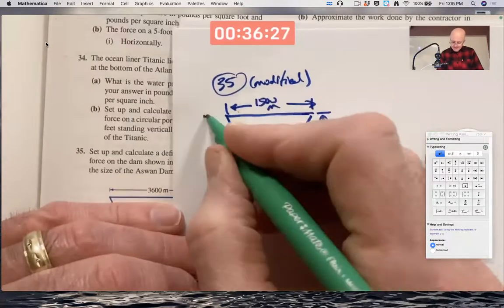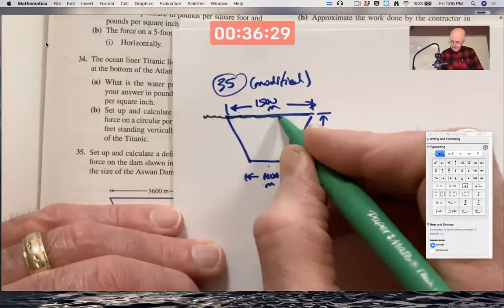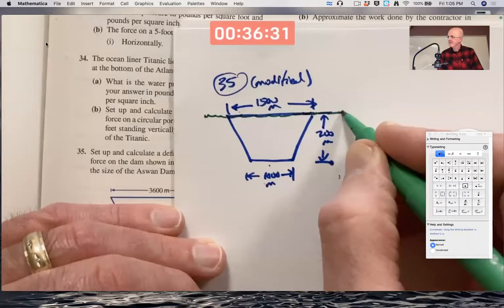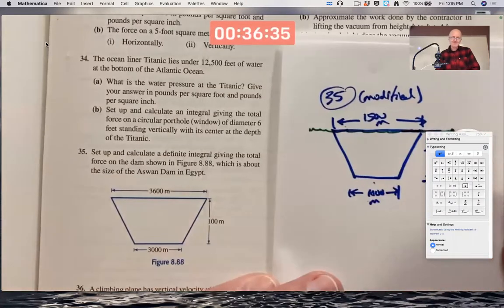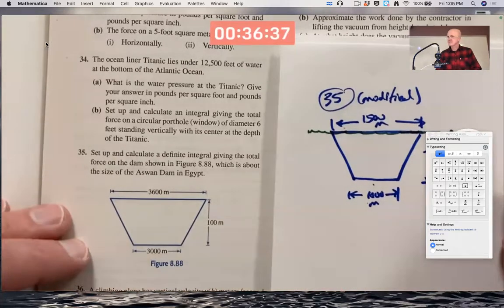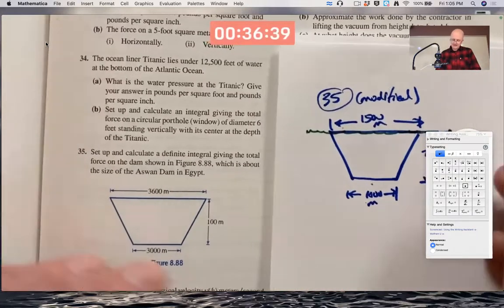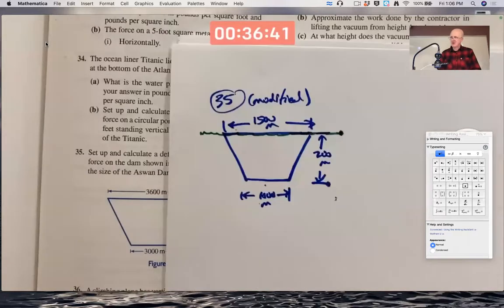The assumption, the implicit assumption is the water level is up to the top of the dam. So water is exerting pressure on the entire dam.